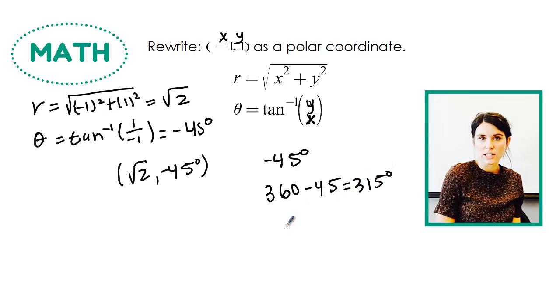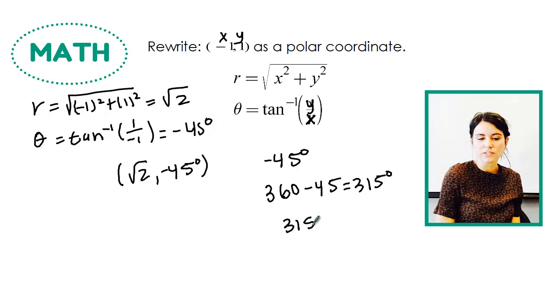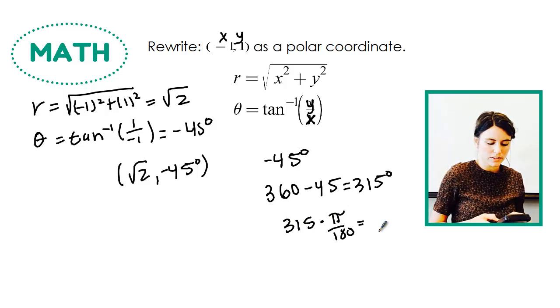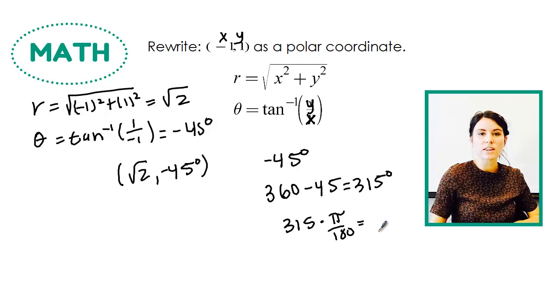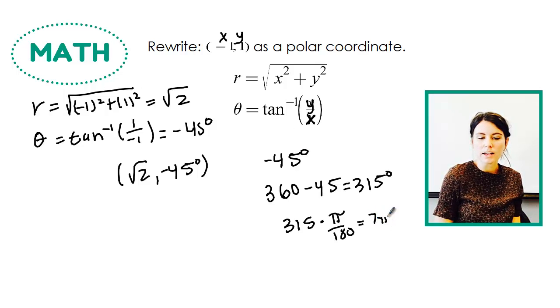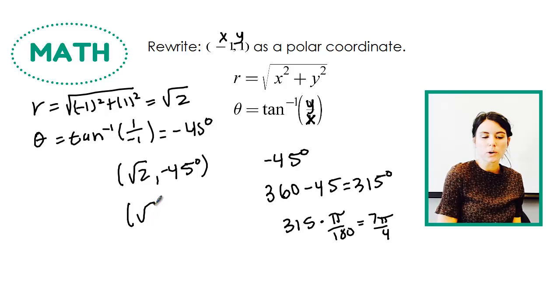Then to figure out its radian measure, I do 315 times π over 180. And that gives me 315 divided by 180 gives me 7/4. So this would be 7π/4. So my polar coordinate is (√2, 7π/4).